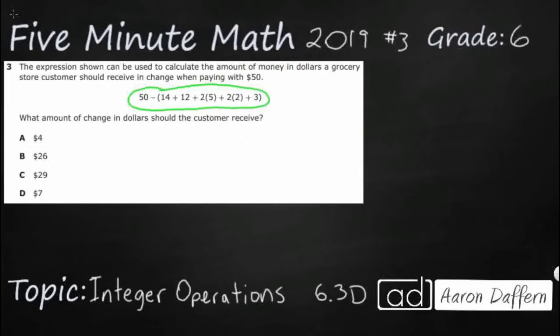We need to simplify that, so we figure out how much change. So they are going to pay with a 50, and then all of this stuff in the parentheses is the amount of items they bought and how much each one costs. We are just trying to basically simplify this really big expression.